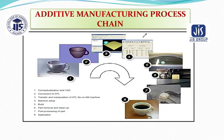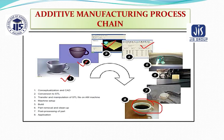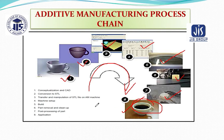The additive manufacturing process involves eight steps to produce a product: (1) conceptualization and CAD, (2) conversion to STL file, (3) transfer and manipulation of STL file on the additive manufacturing machine, (4) machine setup, (5) building the product, (6) removing the part and cleaning up, (7) post-processing such as cleaning, printing, or painting, and (8) application of the product. These are the stages involved in getting a product from additive manufacturing — essentially a complete chain.